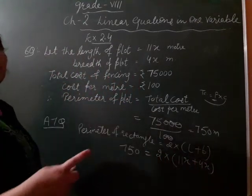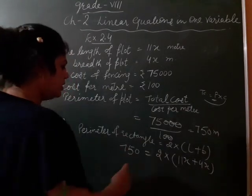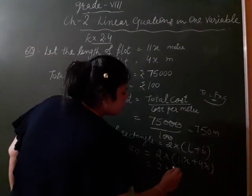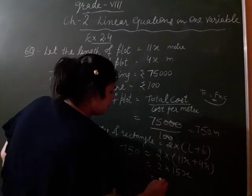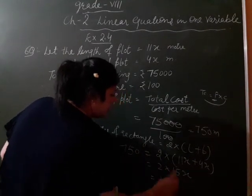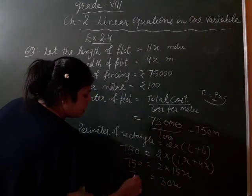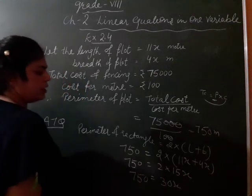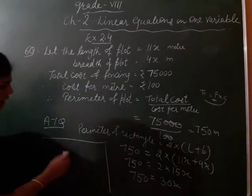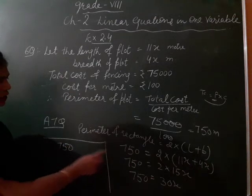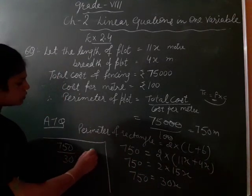So, 11x plus 4x becomes 11 plus 4, that is 15, 2 into 15x. 2 times 15 is 30x. So, 750 equal to 30x. How do we calculate? 750, 30 divided, what will happen? Divide ho jaega, is equal to x.